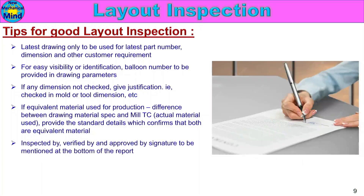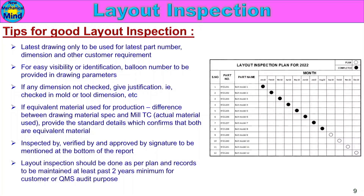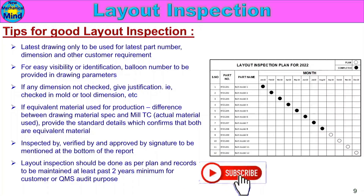Inspection by, Verified by, and Approved by signatures must be mentioned at the bottom of the report. This confirms who performed the layout inspection, who verified it, and who approved it — building customer confidence. Layout inspection should be done as per plan and records must be maintained for at least the last two years minimum, for QMS audit or customer certification audit purposes.